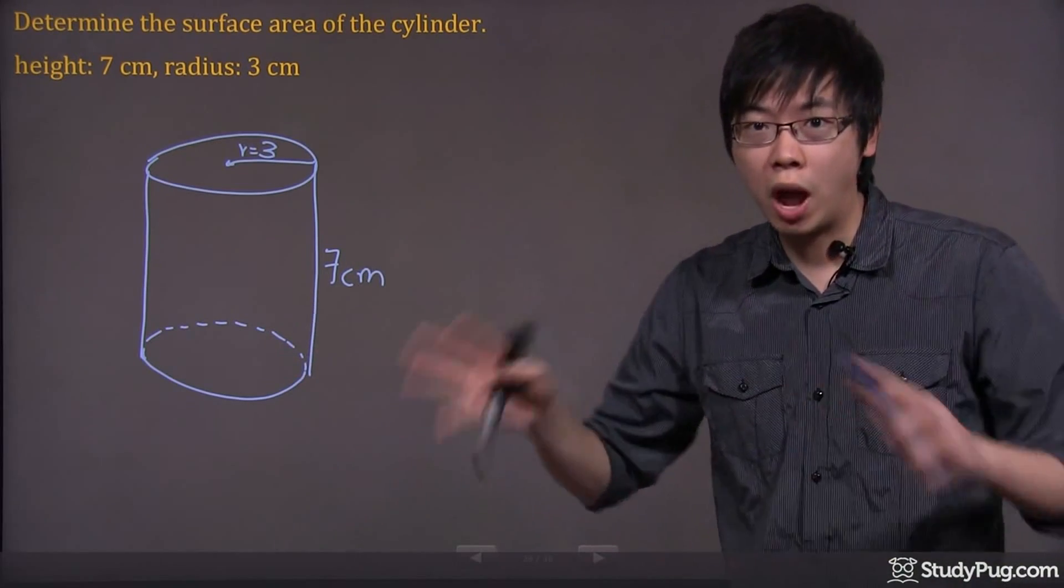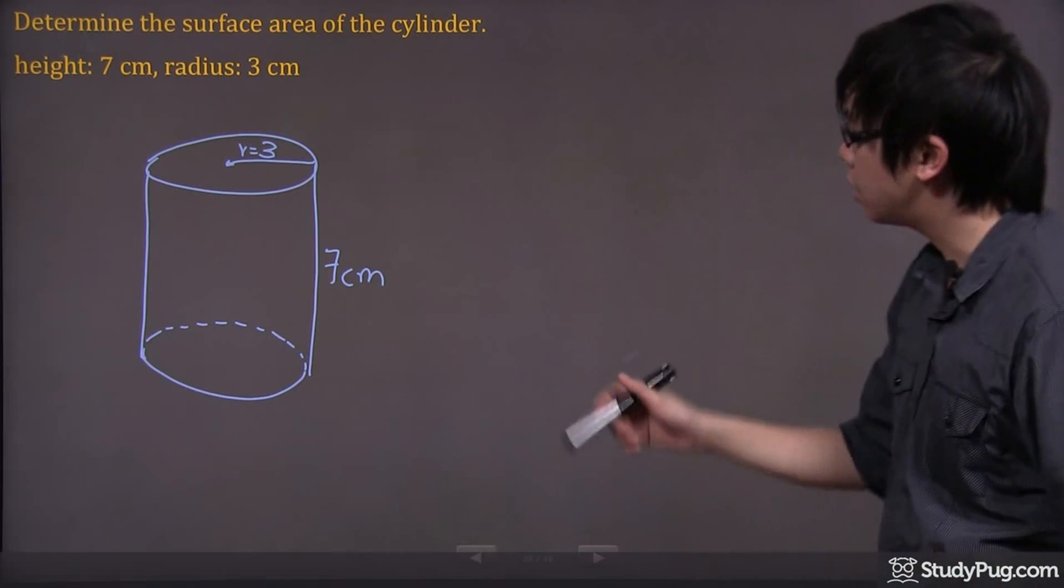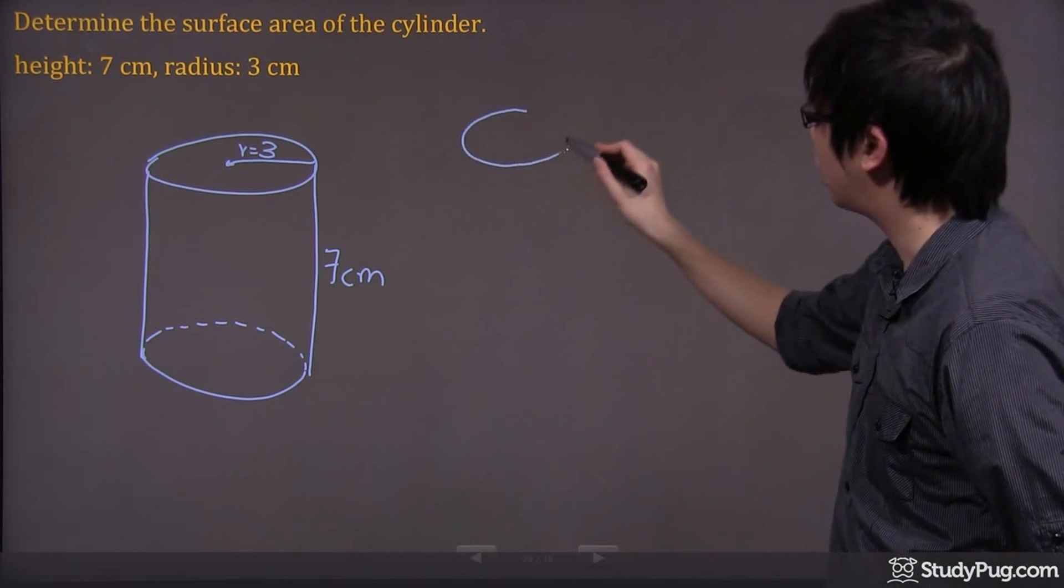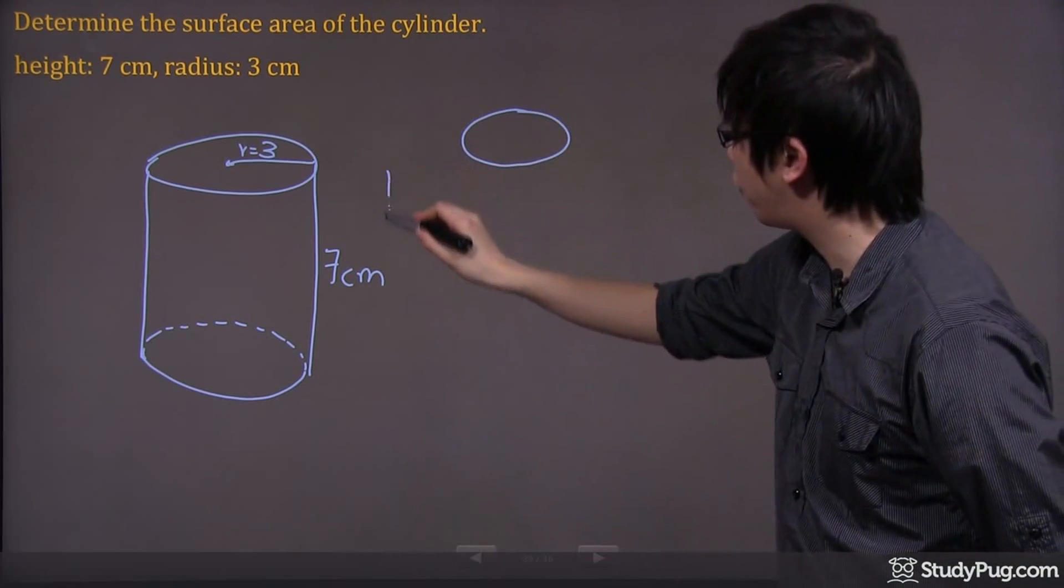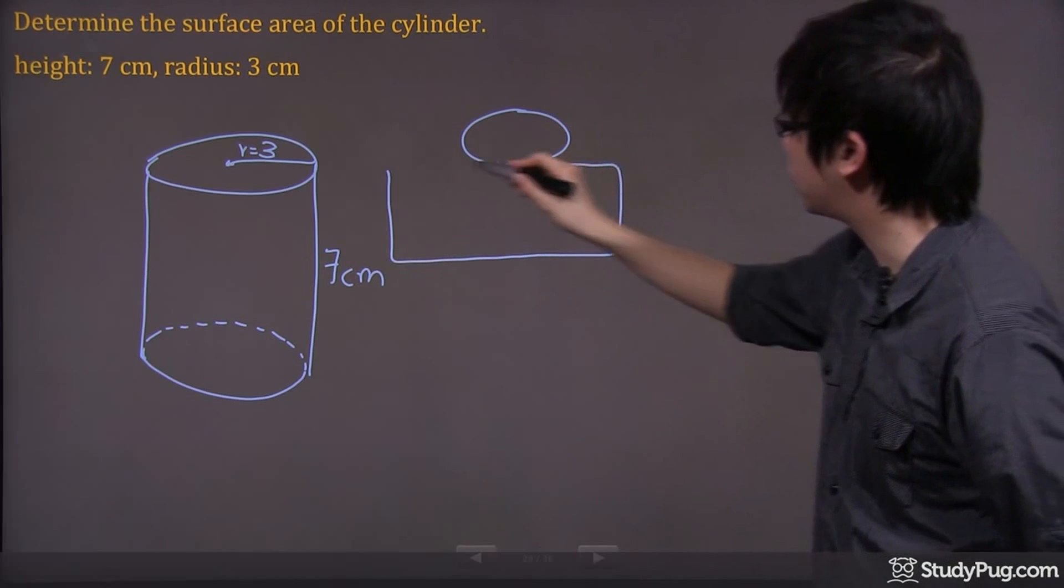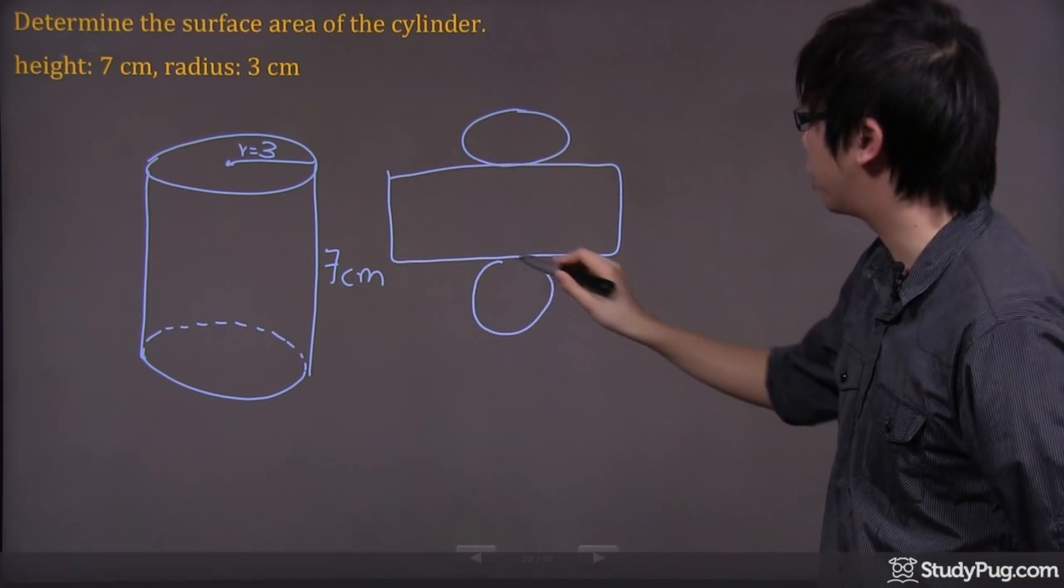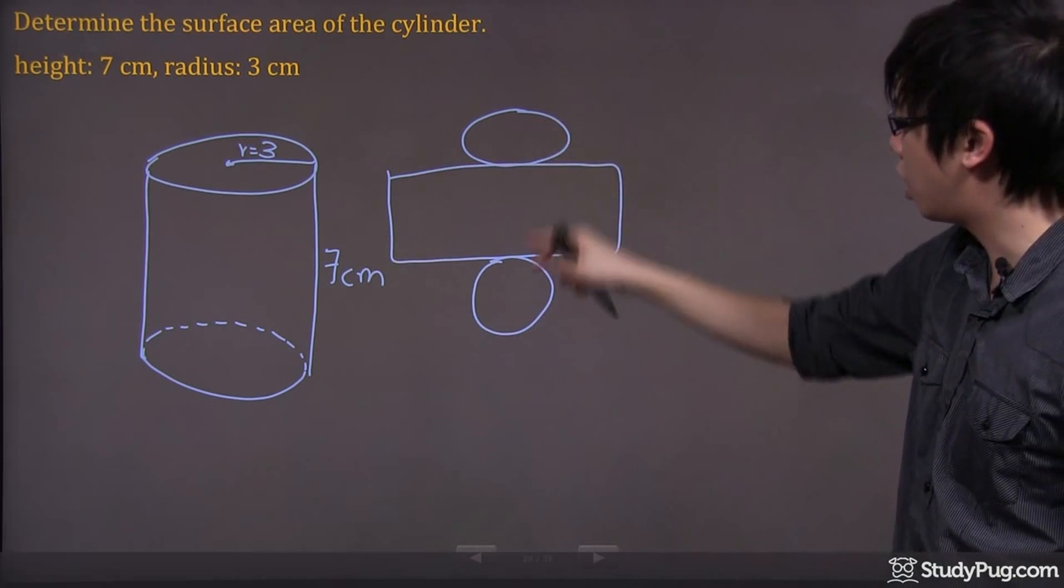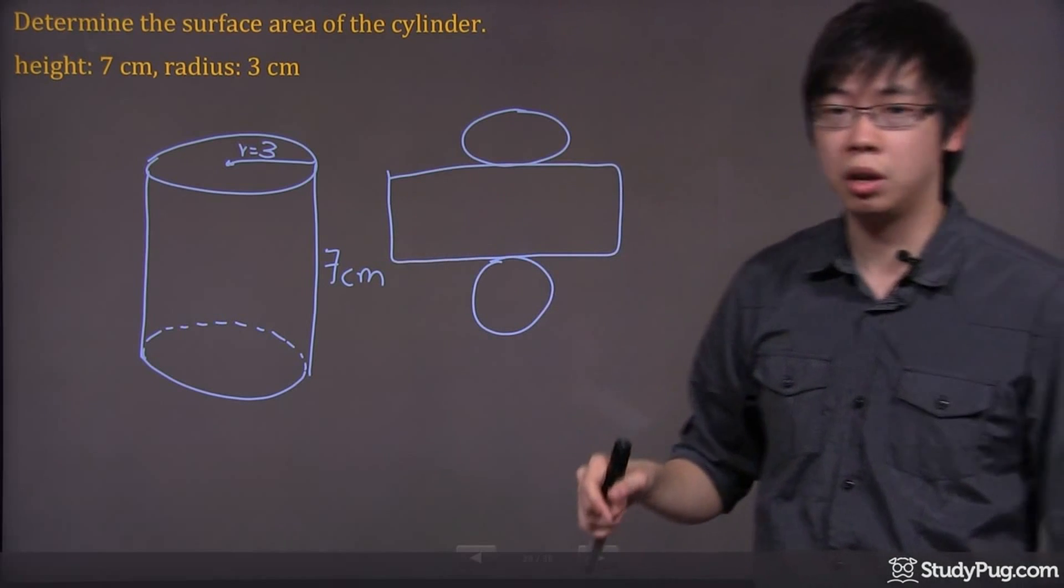If you unwrap the cylinder open, it looks like you have a circle on the top and followed by a rectangular piece in the middle, another circle at the end. That's the top, bottom, and that's the middle piece.